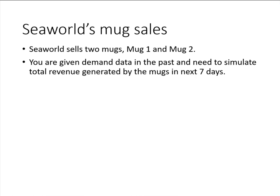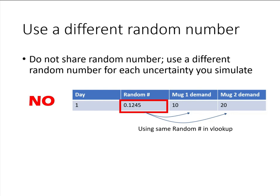In the next quiz, you're going to build a simulation model for Searoad's mock cells. I'm going to use this video to give you a few important reminders. First, please use a different random number whenever you try to simulate something that is uncertain. This does not only apply to this example — it also applies going forward to every example.